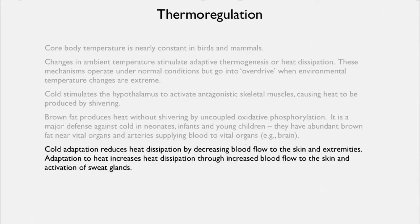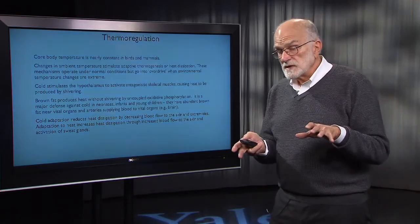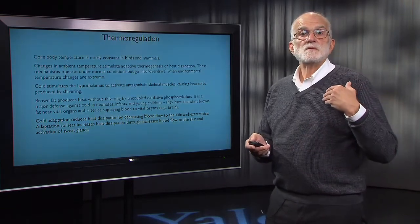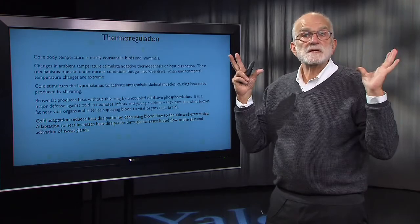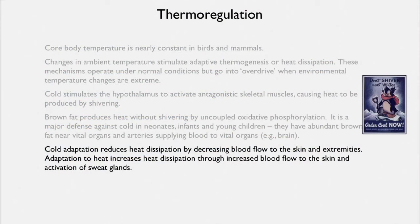Cold adaptation reduces heat dissipation by decreasing blood flow to the skin and to the extremities. When we get cold, we maintain core temperature but notice that our hands and feet become especially cold. Adaptation to heat, on the other hand, causes increased blood flow to the skin and activation of sweat glands. In an African elephant, for example, heat shifts into the large ears in order to dissipate. Much of our adjustment to temperature is also handled culturally — clothes, central heating, and so on.